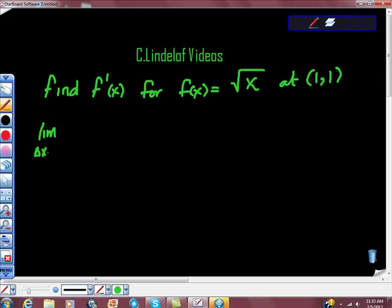This is the limit as the change in x approaches zero. We're asked to find f prime at x for f of x equals the square root of x. We're asked to find the specific slope at that point. So I think the slope's going to come out to be about one half, but let's see. I'm just going to do this problem again.